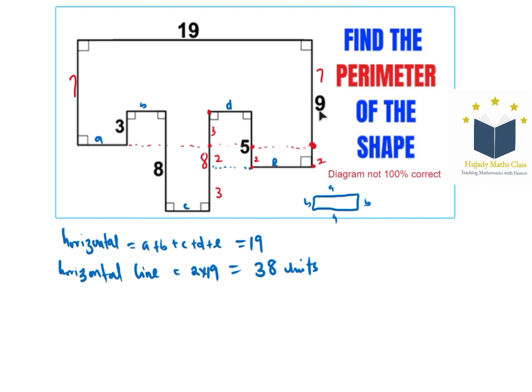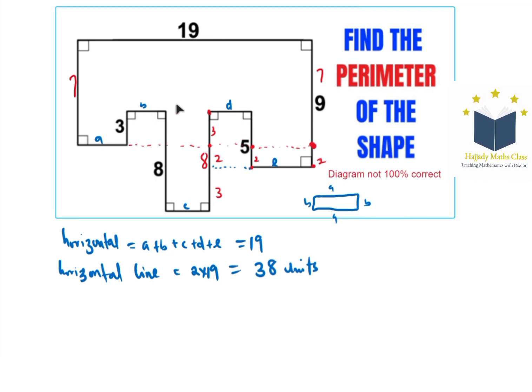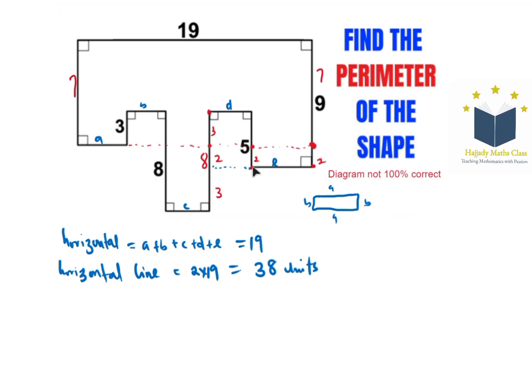We've gotten that, and with that we've gotten the first vertical line, the second vertical line, the third vertical line, the fourth, the fifth, and also the sixth. So summing up our vertical line,